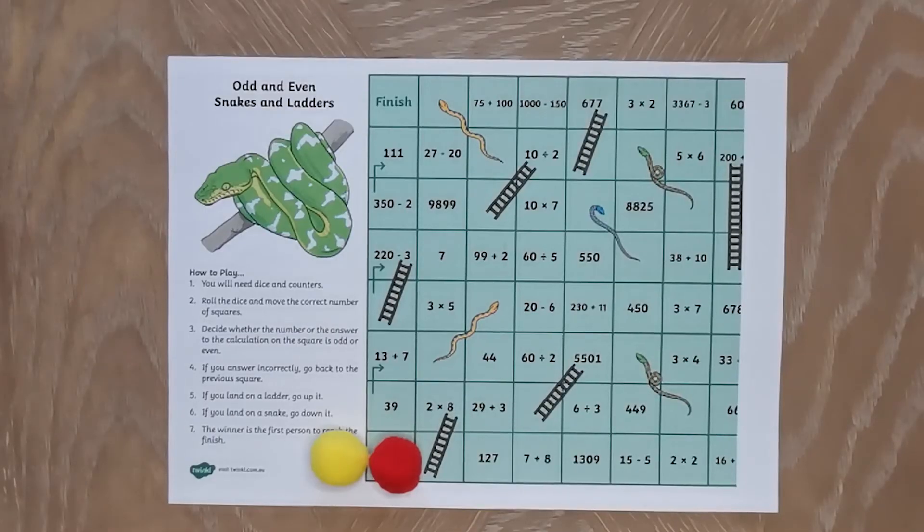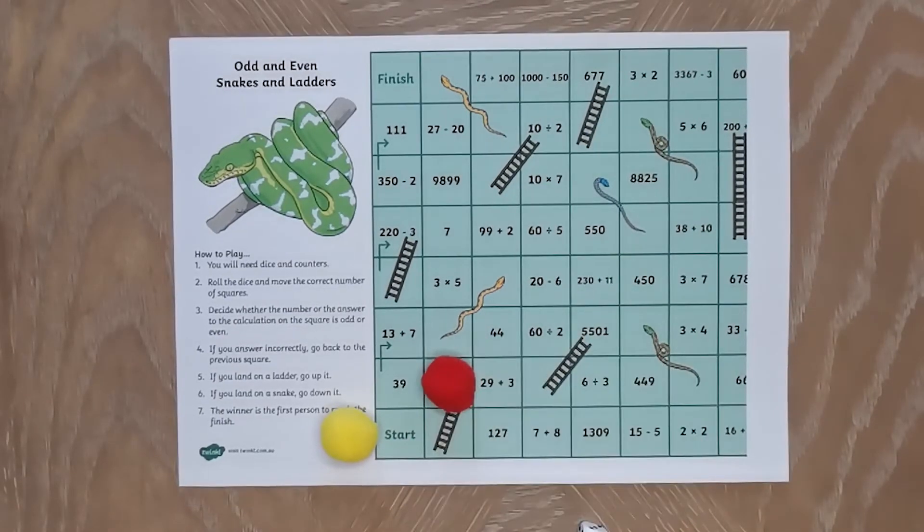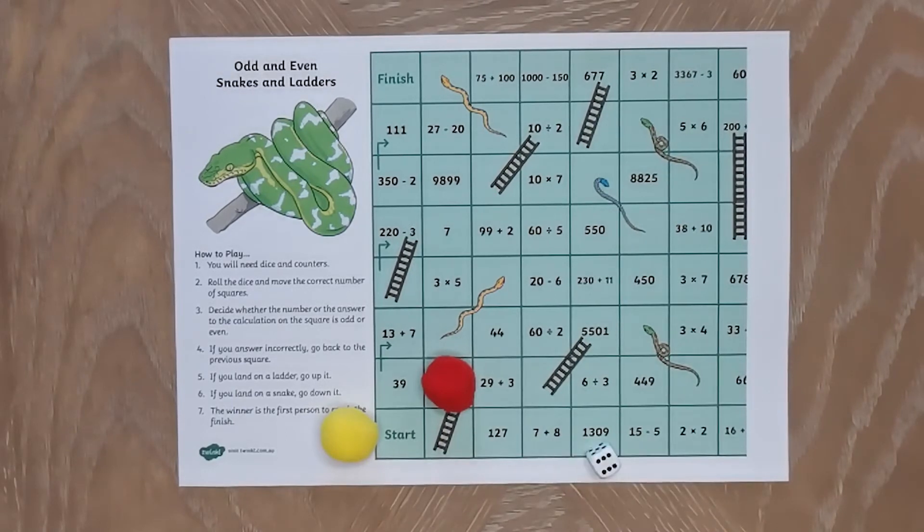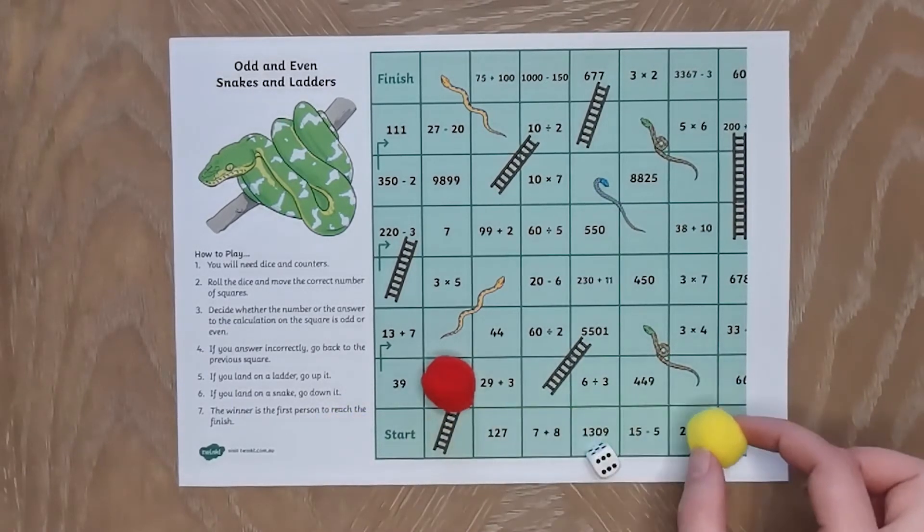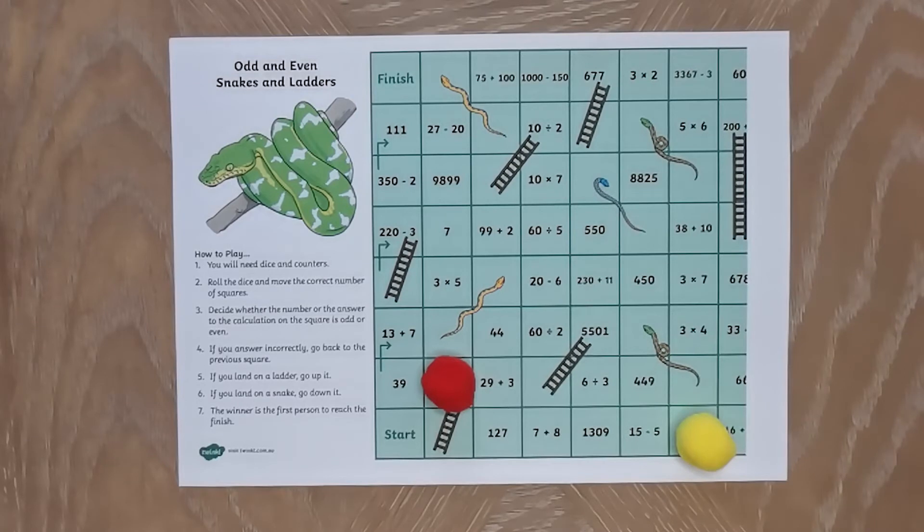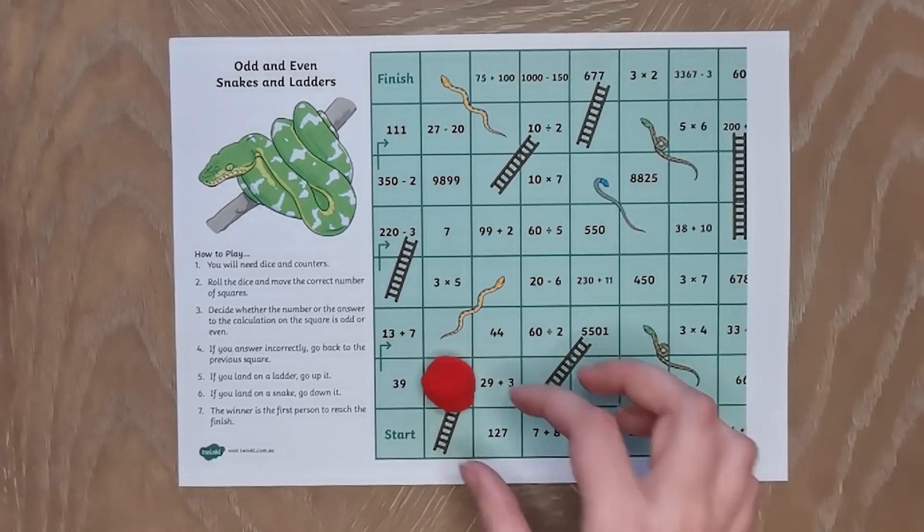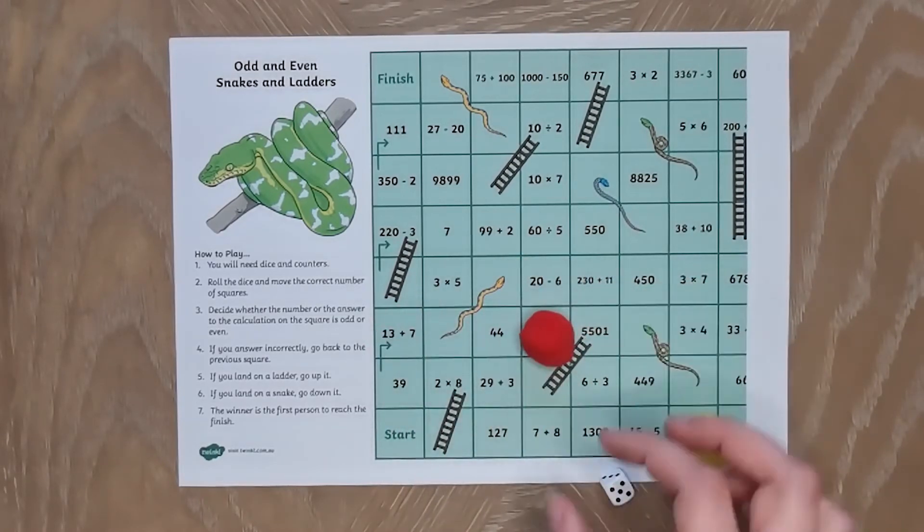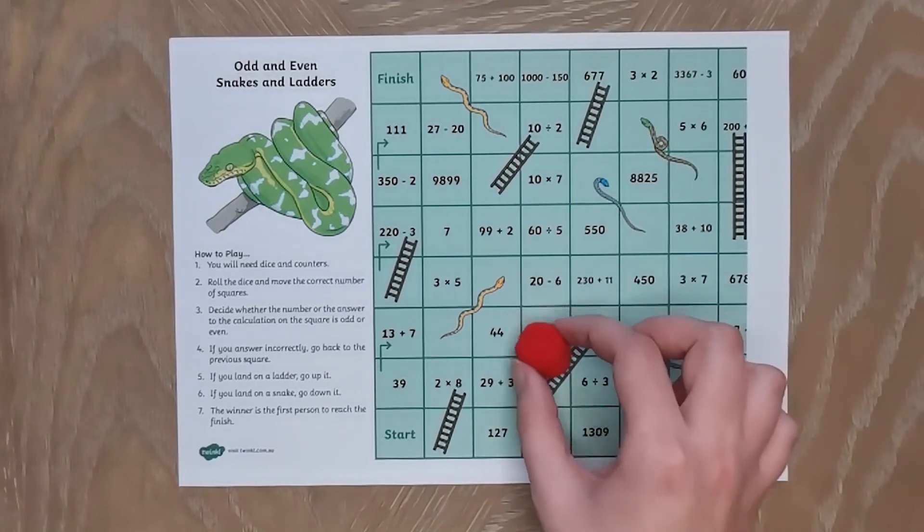This snakes and ladders game is a great way for children to become more confident in finding odd and even numbers. Children should play the game as normal, but when they land on a square they should decide whether the number is odd or even. If they get it right they can stay on that square, and if they get it wrong they should move back a square.